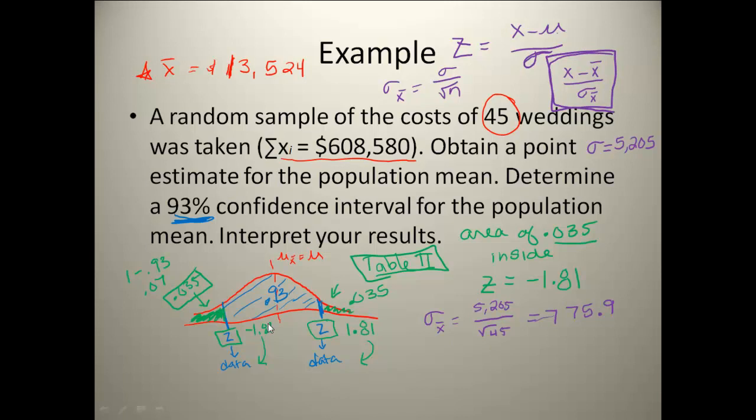Now I can go ahead and use my z-score formula that I have up here, and I can figure out my actual data point. So I'm going to plug in the 1.81 for my z-score. So I would have 1.81 equals x minus, now my x-bar I found up here in that first point estimate, so 13,524 divided by I just found my sample standard deviation to be 775.9, and now I can perform the algebra to figure out the x.